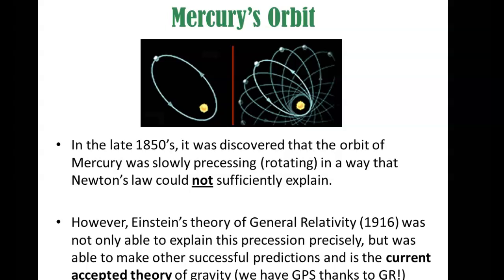Newton's law of gravity was awesome for most things, but this one tiny sensitive thing — the precession of Mercury's orbit — it couldn't explain, whereas general relativity could cover basically everything. The current understanding of gravity still falls under general relativity. Since Einstein came up with it, we haven't come up with a better theory of gravity, and we can even have awesome technology like GPS thanks to general relativity.